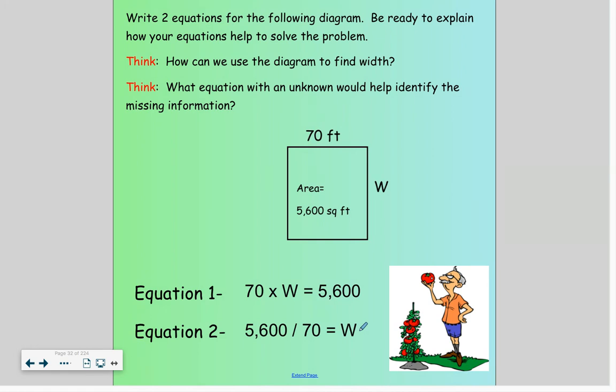We always think about area as length times width, but it also could be the reciprocal with division. W equals 80 feet.